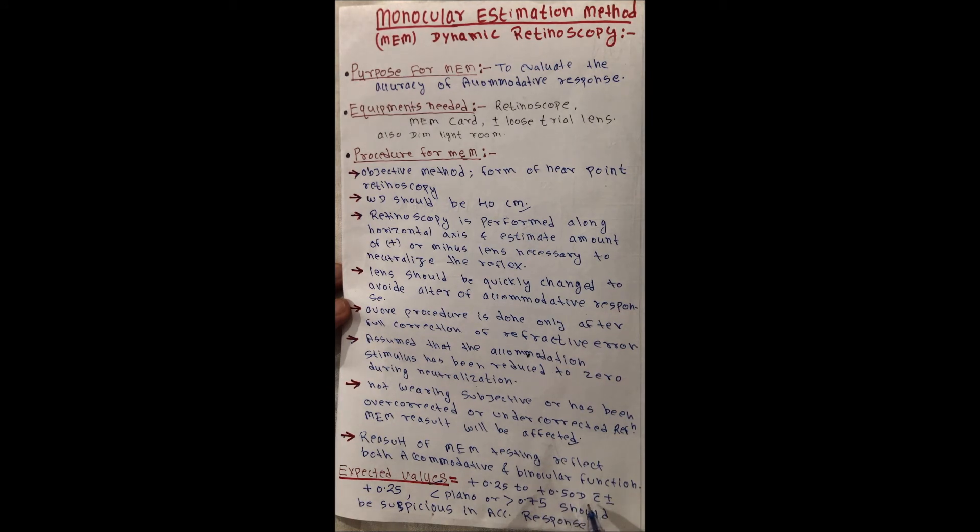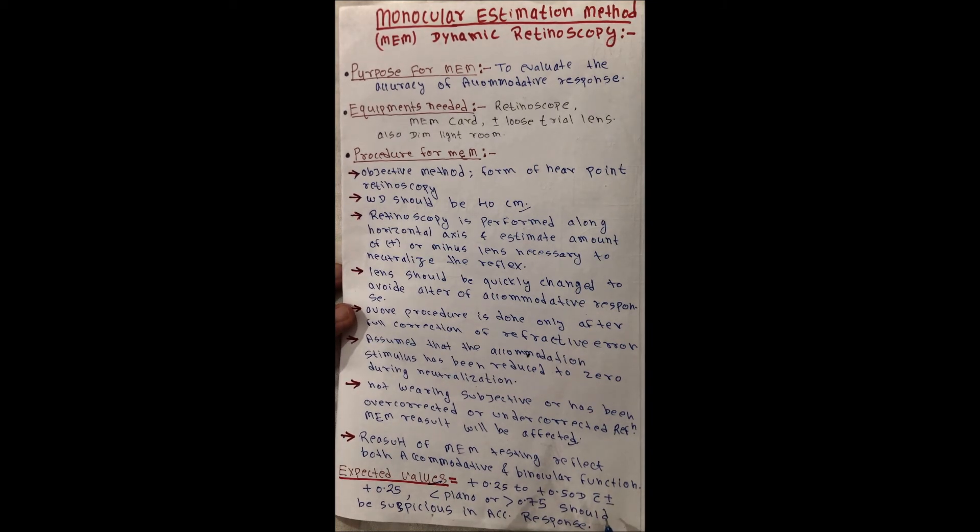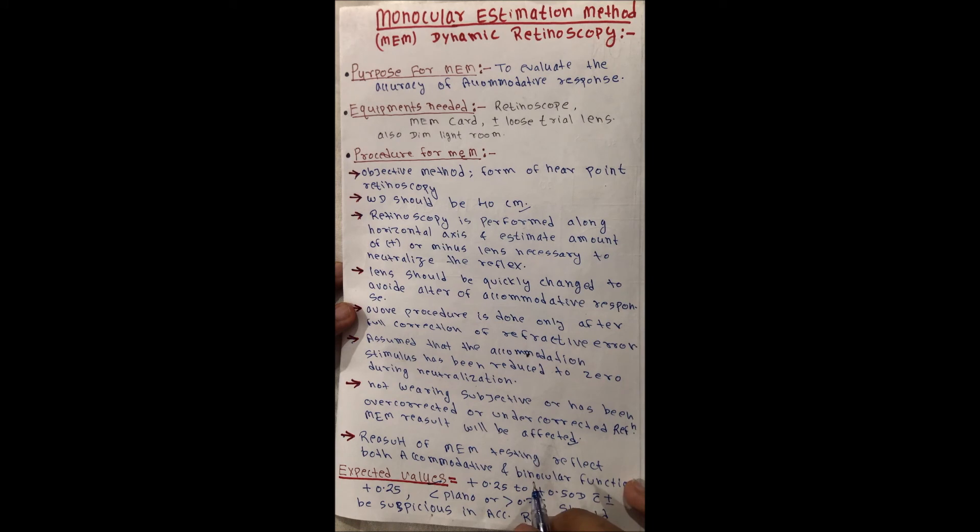Less than plano or more than 0.75 plus power should be suspicious in accommodative response. Thank you, hope it was helpful to you, and subscribe for more updates.